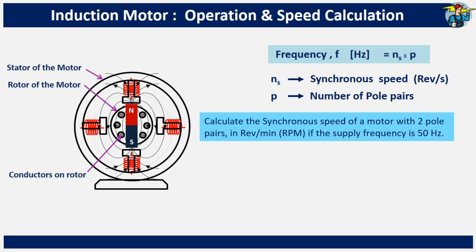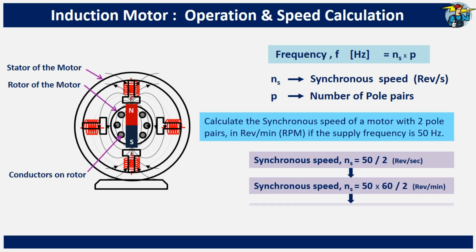If this question changes to a motor with two pole pairs, the synchronous speed is 50 divided by 2. After multiplying by 60 to convert to RPM, you get a synchronous speed of 1500 RPM for this motor.